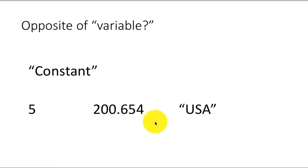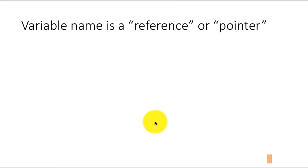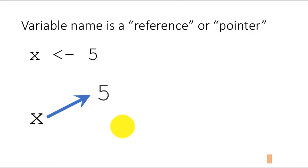So the words constant and literal are both used in this context. Now another thing we need to understand is that variable names are actually references or pointers. Suppose I say x contains the value 5 — that is, x is assigned the value 5 — then what we are really saying is there is this variable called x, there is the value called 5, both of these are sitting separately, and x is pointing to the value 5. So whenever you say x, the system is going to look at what x is pointing to and then go use that object.